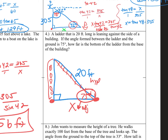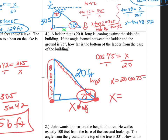So cosine 75 equals X over 20. Cross multiply: X equals 20 times cosine 75. In your calculator — about five feet. That makes sense. Your ladder is only 20 feet long. Think about this: you have a 20 foot long ladder leaning against the side of a house. It's not going to be more than four or five feet away from the base of the house.